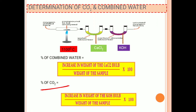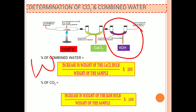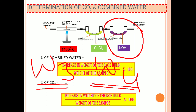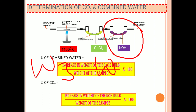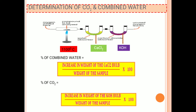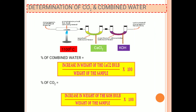Let the initial weight of the CaCl₂ bulb be W1 and the final weight be W2. The difference W2 minus W1 gives the weight of combined water. The increase in weight of the CaCl₂ bulb divided by the weight of sample, multiplied by 100, gives the percentage of combined water. For CO₂, use the KOH bulb: let the initial weight be W3 and final weight W4. W4 minus W3 gives the weight of CO₂, and that divided by the weight of sample times 100 gives the percentage of CO₂.